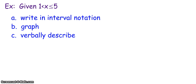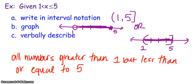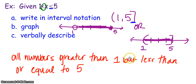Try this one on your own: given 1 < x ≤ 5, write it in interval notation, graph it on a number line, and describe it verbally. The answer: interval notation is (1, 5] — a parenthesis around the 1 and a bracket for the 5. On the graph, an open circle at 1 and a closed circle at 5, with everything colored in between. Verbally, it's all numbers greater than 1 but less than or equal to 5.